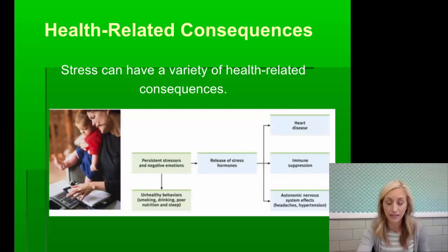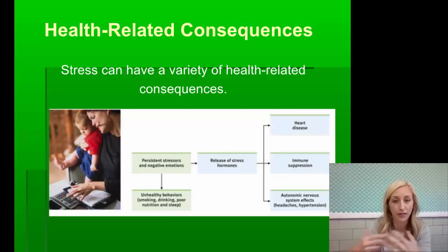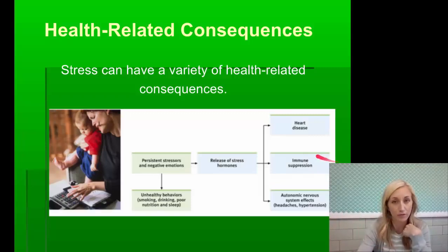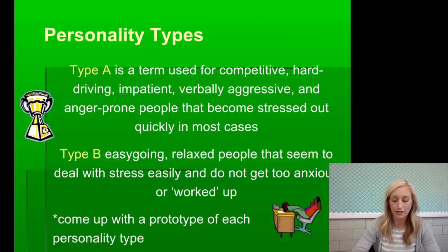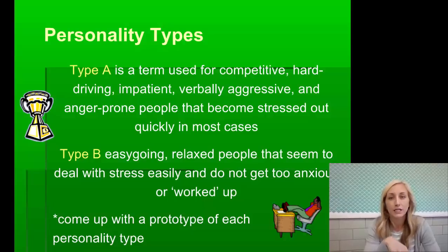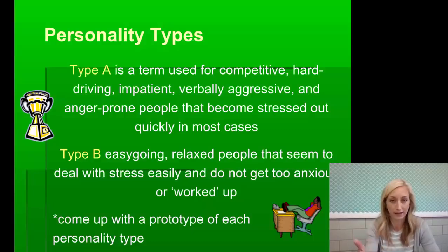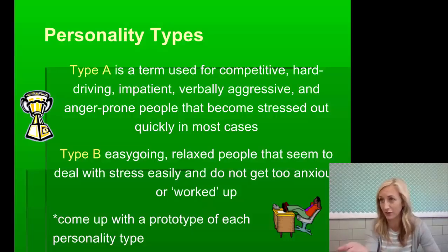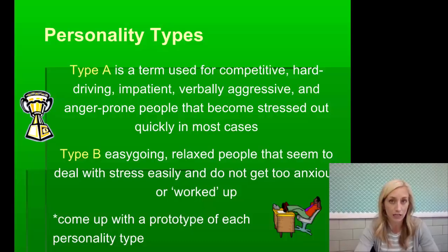Stress can have health-related consequences including hypertension, chronic heart disease, headaches, and immune suppression. Unhealthy lifestyle behaviors like smoking, drinking, poor nutrition, and poor sleep can further perpetuate the problem. Personality types also affect how we deal with stress. Type A describes competitive, hard-driving, impatient, verbally aggressive, and anger-prone people who become stressed quickly. Type B describes more easy-going, relaxed people who deal with stress easily and don't get too anxious. Think of a prototype for each type and write it in your notes.